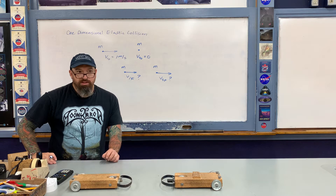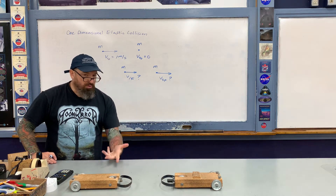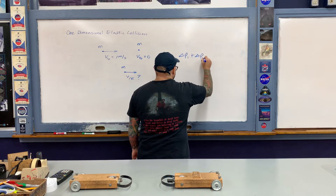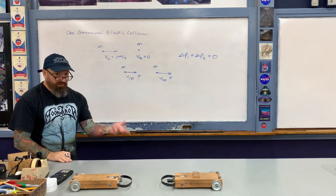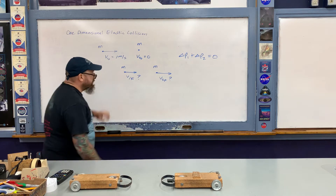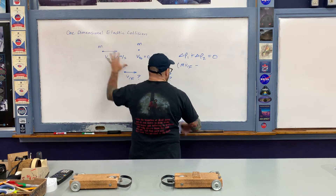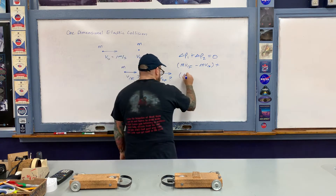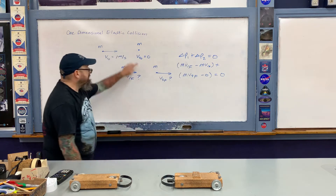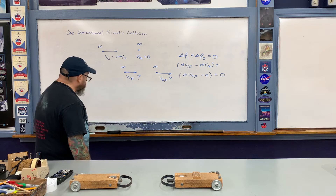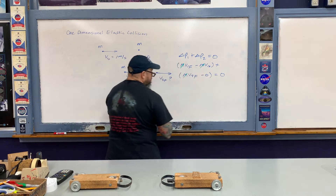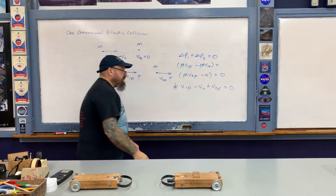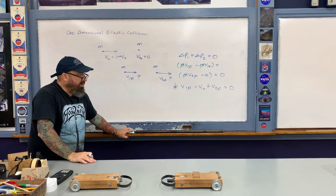The first equation is conservation of momentum. Writing the change in momentum for each object equal to zero: for object one, (m·v1_final − m·v1₀) plus for object two, (m·v2_final − 0) = 0. The mass m cancels throughout, leaving us with the simplified momentum equation containing two unknowns: v1_final and v2_final.